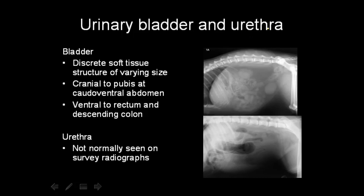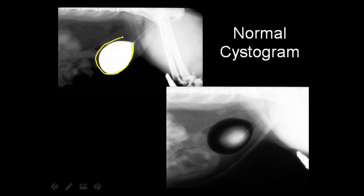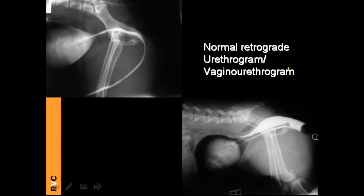The urinary bladder is a discrete soft tissue opacity, cranial to the pubis and ventral to the rectum and descending colon. The urethra is not normally seen on survey radiographs and requires contrast for evaluation. We can perform a positive contrast cystogram filling with iodine contrast, or a double contrast cystogram. A retrograde urethrogram is used to visualize the urethra, and in females, a vaginal urethrogram is used to fill the vagina and then the urethra.